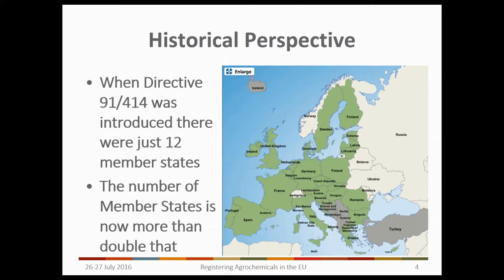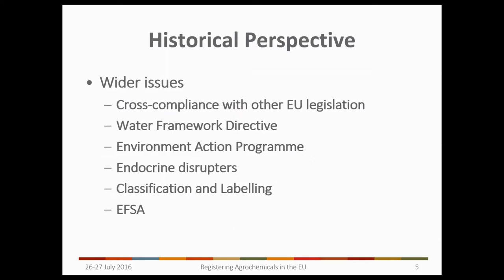Another point to note is that when Directive 91/414 was first introduced there were actually just 12 member states within the EU. As you all know, the number of member states is now more than double that, so the size of the EU has changed hugely since the Directive was put into place.